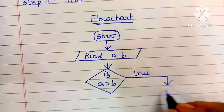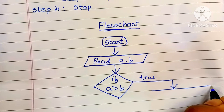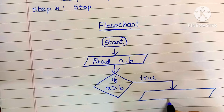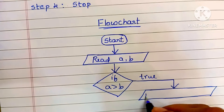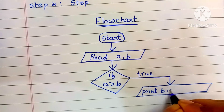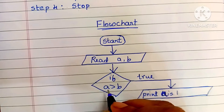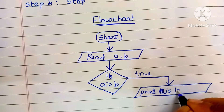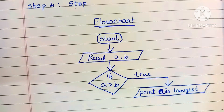If the condition a greater than b is true, we print 'a is largest number'. The output statement is always written within a parallelogram shape. So we draw a parallelogram and write 'a is largest'.